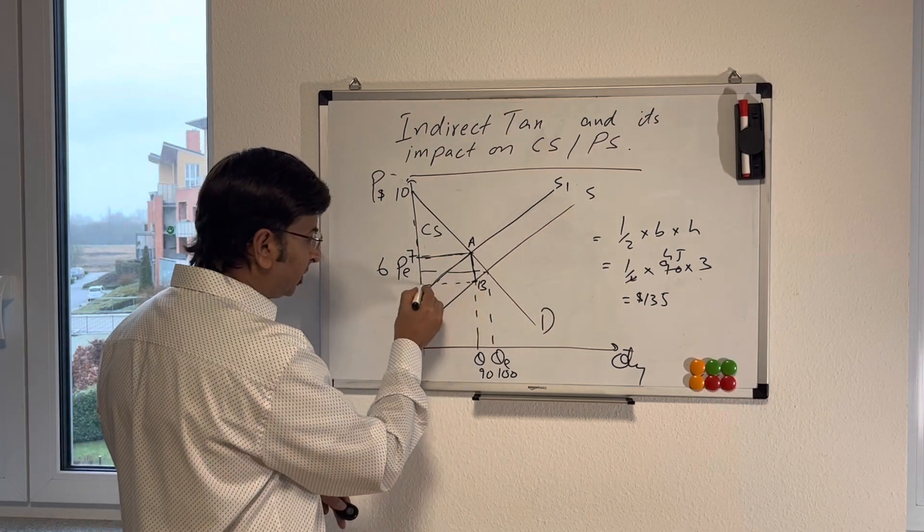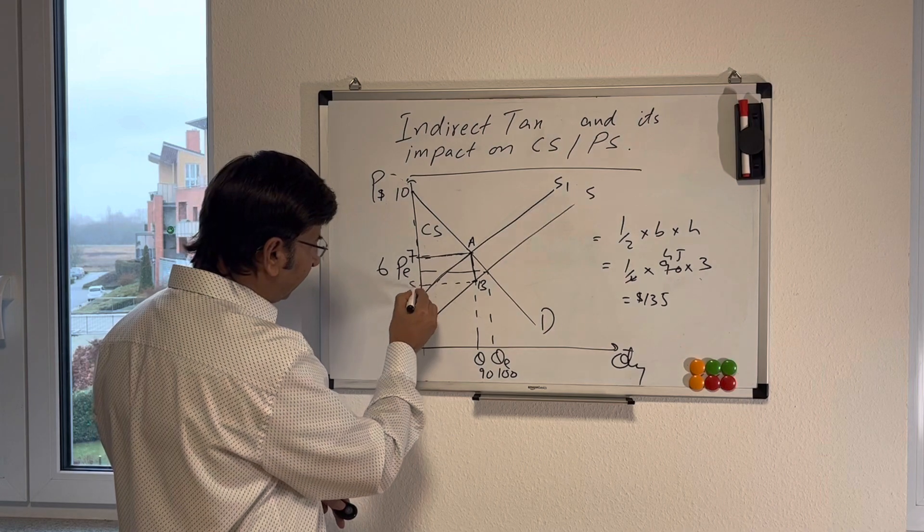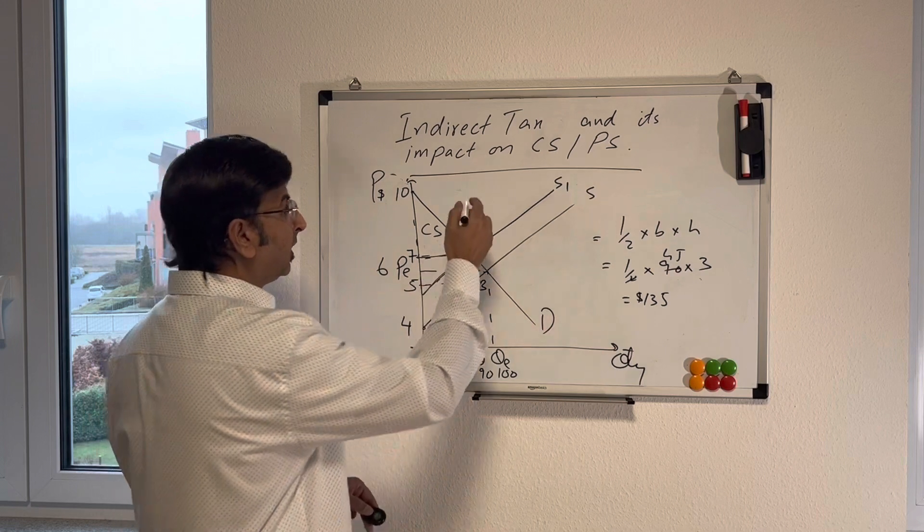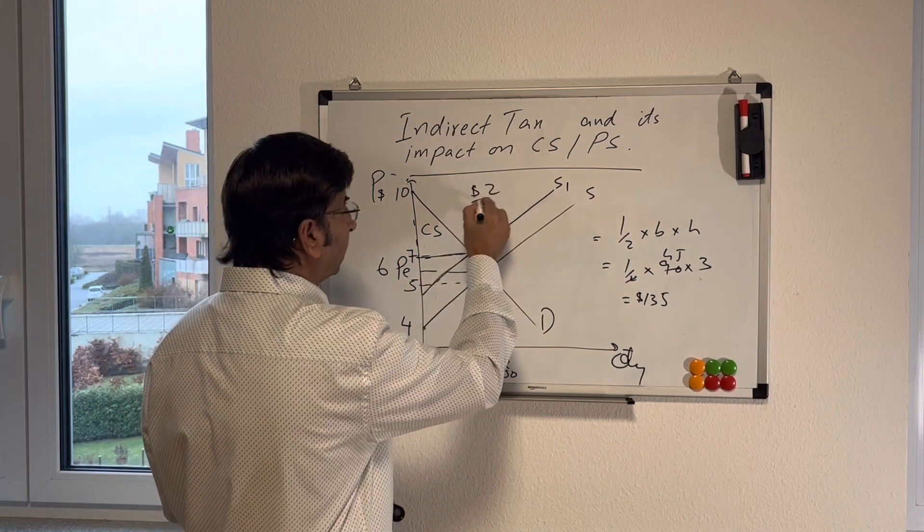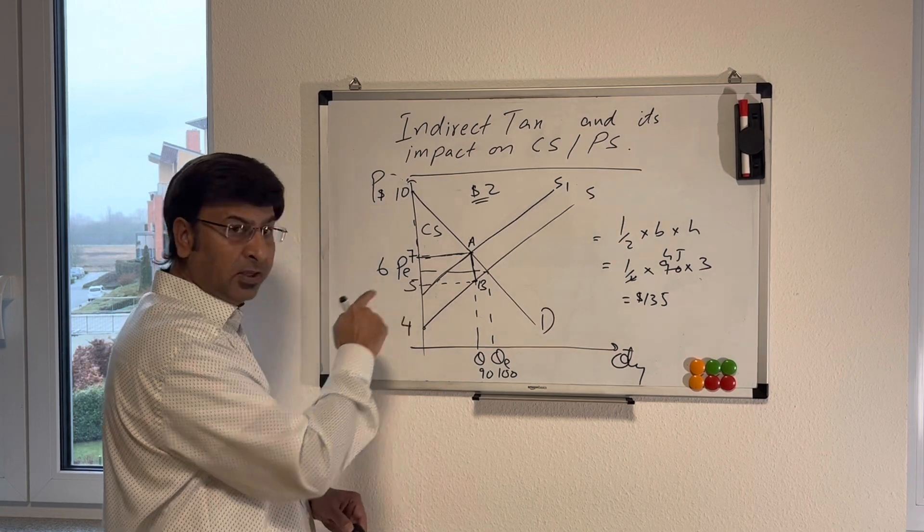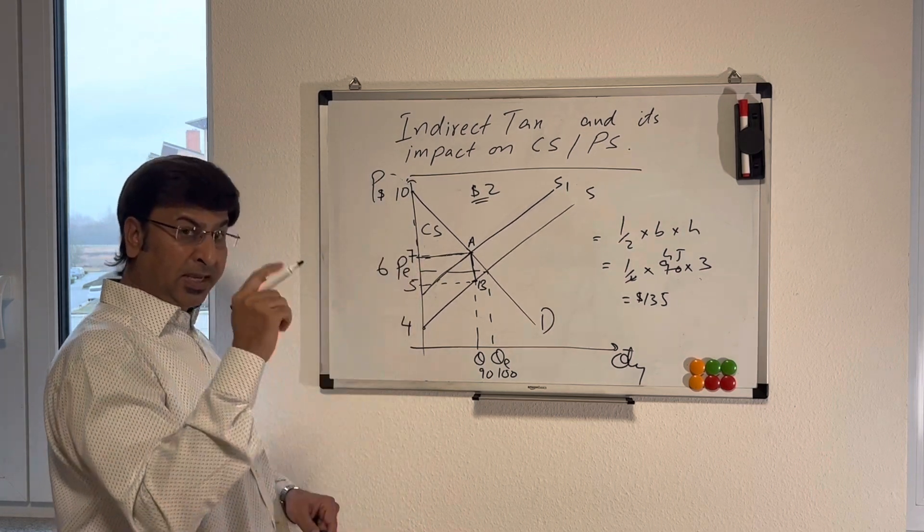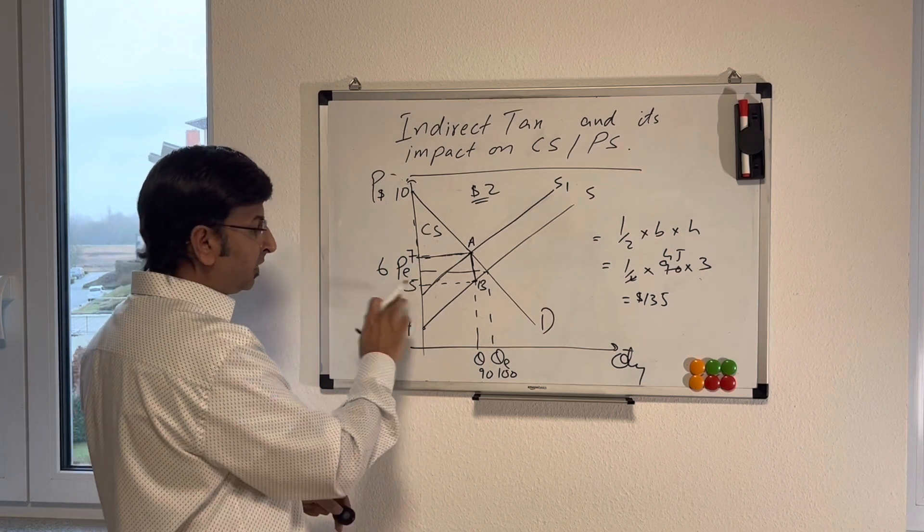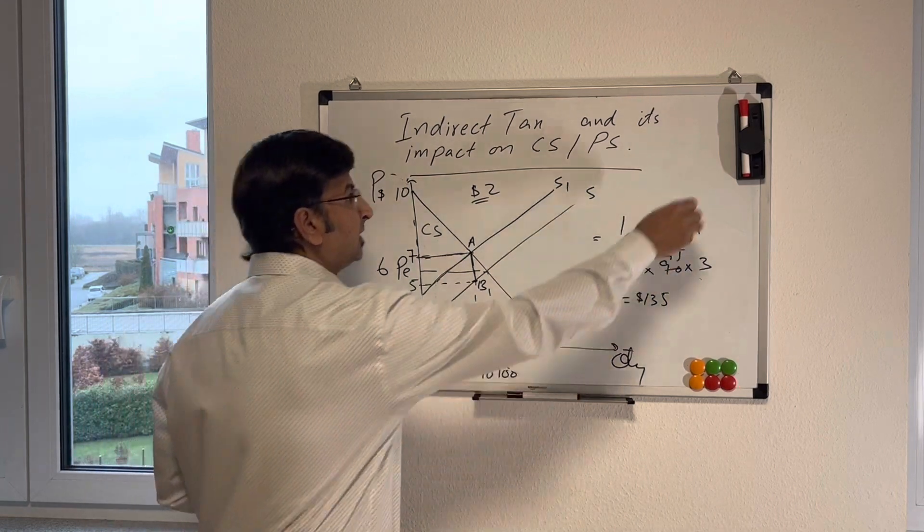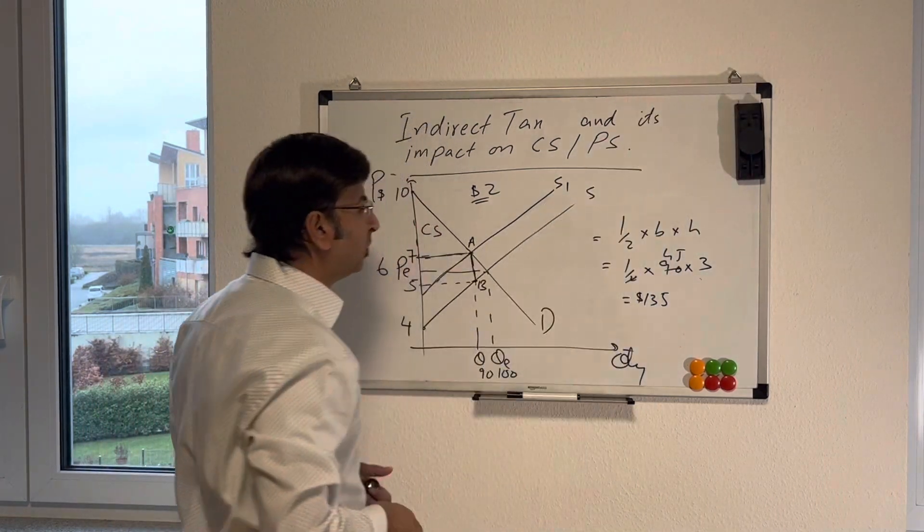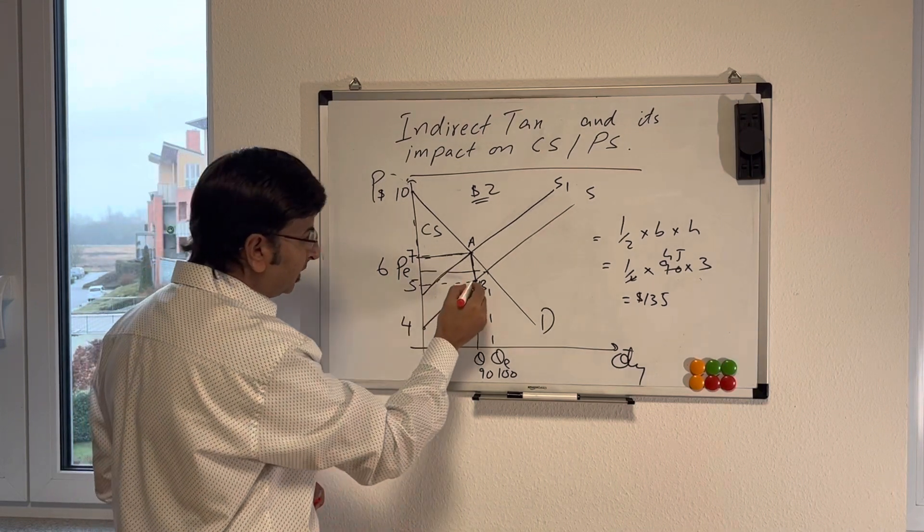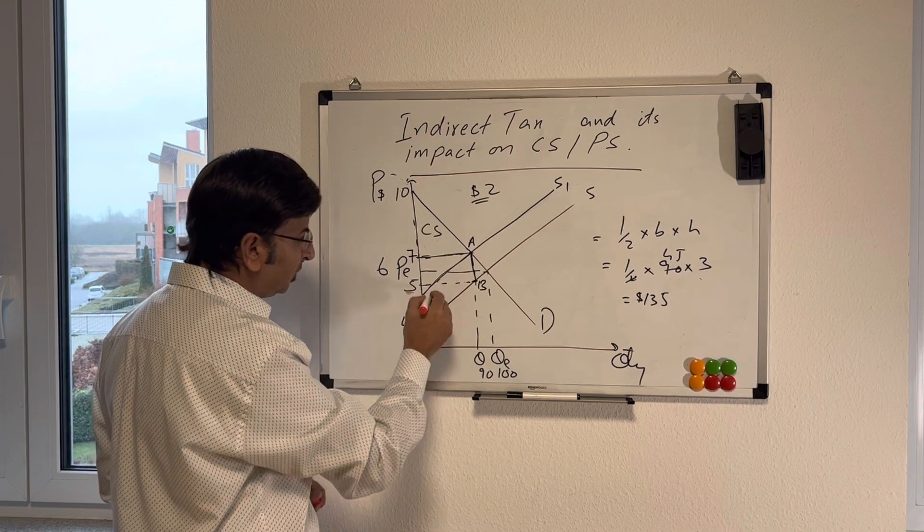The producer price is going to be, let me take it 5. Actually it should be 5 because I said the indirect tax of $2 is imposed. So the producer price actually here is 5, not 7. The consumer pays 7 but the producer gets 5. And this is the reason that producer surplus is not the area I have shown you earlier, which was this area. The area actually is the price what producer gets and what he is willing to sell at. So this is the area of producer surplus.